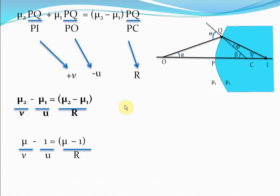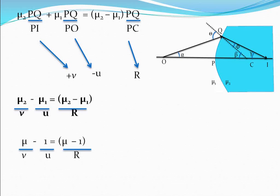This is a very important formula and you must remember it. For any two surfaces, when light gets refracted through a spherical surface, you can always use this formula. Here, mu2 is the refractive index of the medium into which the light is going, mu1 is the refractive index of the medium from which the light is coming, and R is the radius of curvature of the spherical surface across which the refraction is taking place.